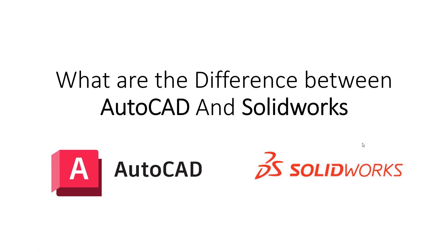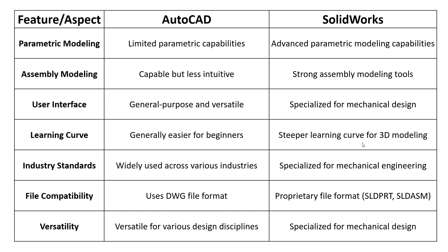AutoCAD and SOLIDWORKS are both popular software tools used in the field of mechanical design, but they differ in various aspects, especially when it comes to parametric modeling and mechanical design. Here are some key differences between AutoCAD and SOLIDWORKS in terms of mechanical design and parametric concepts.